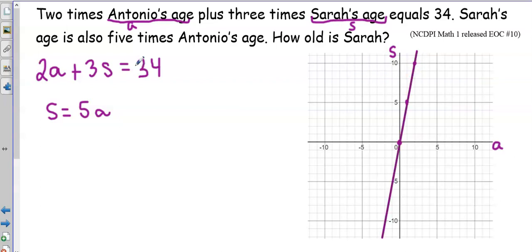To graph my other equation, I'm going to use the x and y-intercepts. I'll substitute zero in for A to find the y-intercept. That gives me 3S equals 34. And when I divide by three on both sides of the equation, I have 11 and one third. So my S axis here, I'll go 11 and a third around up there.